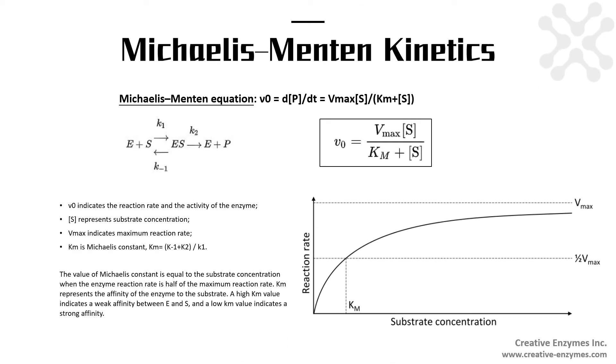What is shown here is the Michaelis-Menten equation. V indicates the reaction rate and the activity of the enzyme. S represents substrate concentration. Vmax indicates maximum reaction rate. Km is the Michaelis constant.